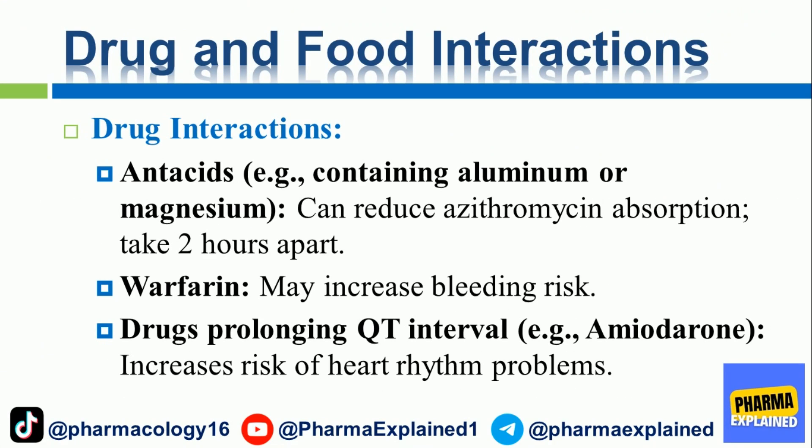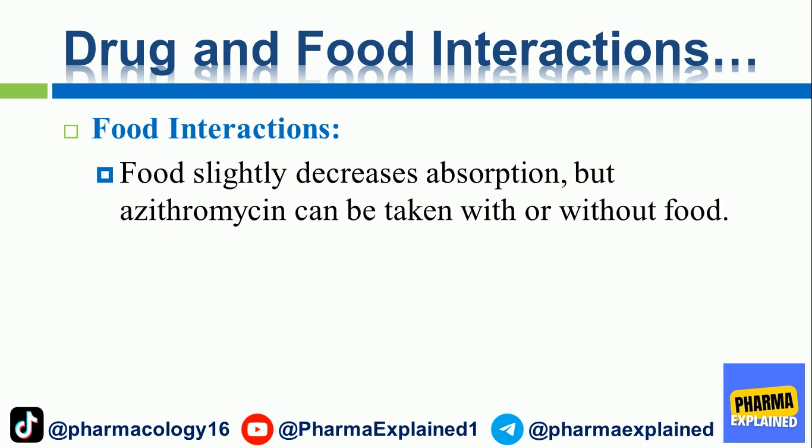Drug and food interactions: Antacids containing aluminum or magnesium can reduce azithromycin absorption — take them two hours apart. Warfarin may increase bleeding risk. Drugs that prolong the QT interval, such as amiodarone, increase the risk of heart rhythm problems. Regarding food interactions, food slightly decreases absorption, but azithromycin can be taken with or without food.